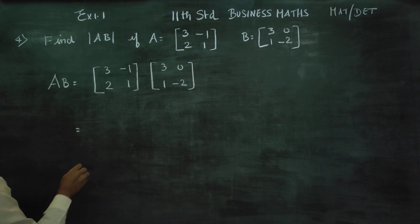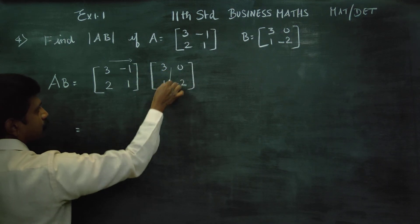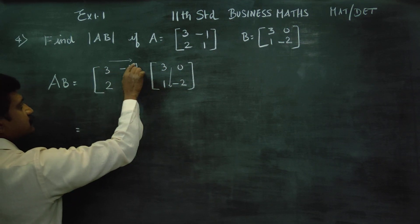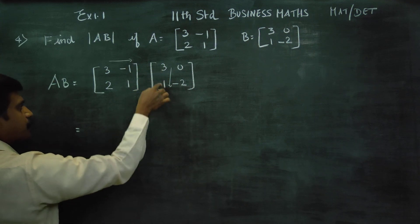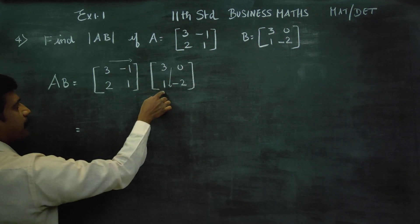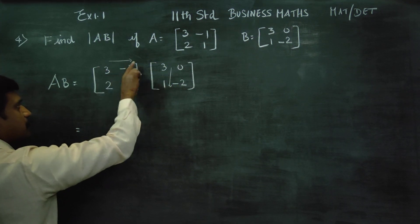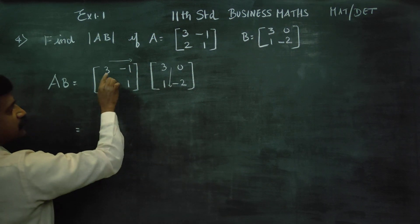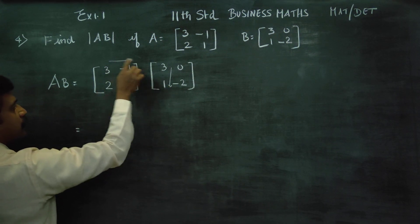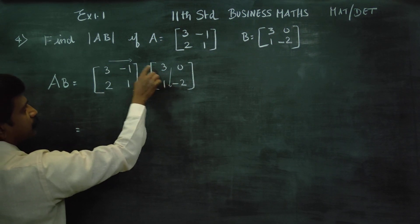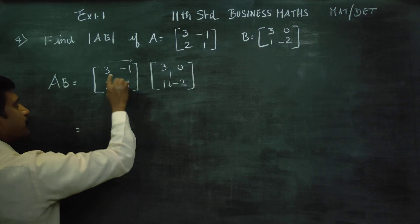Multiply — which is a matrix, row into column. First row, first column.